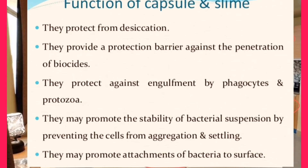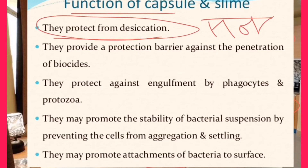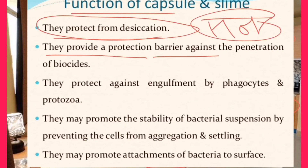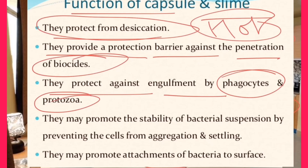Now we discuss the functions of capsules and slime layers. They protect cells from desiccation, heat, temperature extremes, and other unfavorable conditions, helping the cells survive undesirable situations. They provide a protection barrier against biocides and certain chemicals, inhibiting their entry into the cell. They also protect against engulfing by phagocytic cells and protozoa — bacteria covered by capsules or slime layers cannot easily be digested by phagocytes or protozoa.